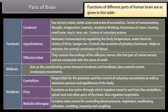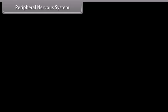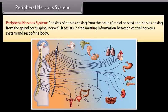The functions of different parts of the human brain are as given in the table. The spinal cord controls reflex actions and conducts messages between different parts of the body and the brain. The peripheral nervous system consists of cranial nerves arising from the brain and spinal nerves arising from the spinal cord. It assists in transmitting information between the central nervous system and the rest of the body.